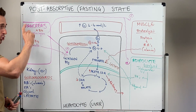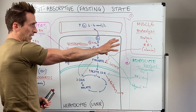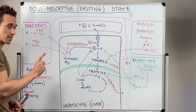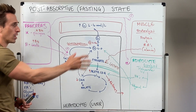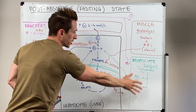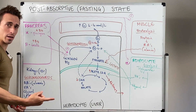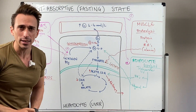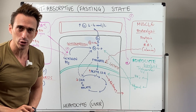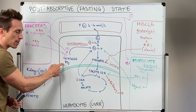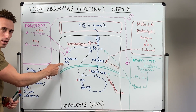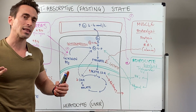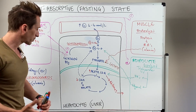Insulin is a strong negative regulator of gluconeogenesis. And after 10 to 12 hours, gluconeogenesis is contributing to 50% of all the glucose being released into our bloodstream. Because every hour, 8% of my glycogen is being utilized until there's hardly any or none left at all.